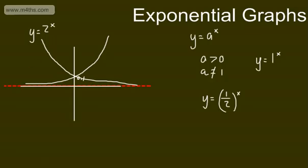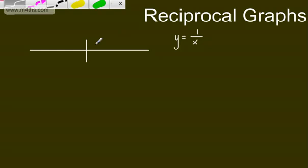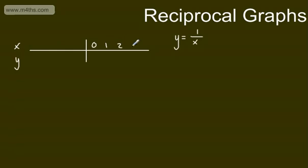Let's now go on to the last type: reciprocal graphs. The general formula you'll meet at GCSE is y is equal to 1 over x. As x gets very big, this is going to get very small because we're dividing. Looking at a table of values: when x is 1, y is 1; when x is 2, y is one half; when x is 3, y is one third; when x is 4, y is one quarter. As x gets very big, this gets very small.